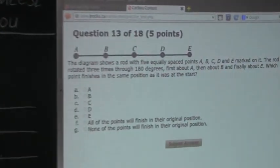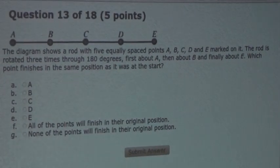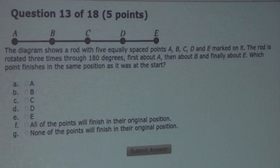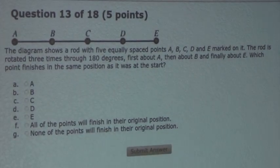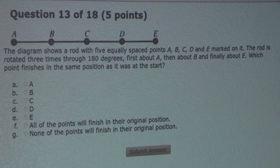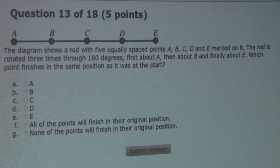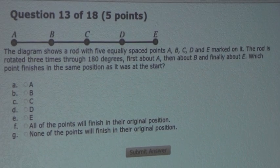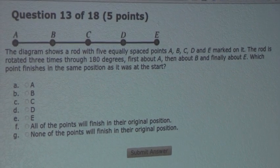So the question is, the diagram shows a rod with 5 equally spaced points A, B, C, D, and E marked on it. The rod is rotated 3 times through 180 degrees, first about A, then about B, and finally about E. Which point finishes in the same position as it was at the start?